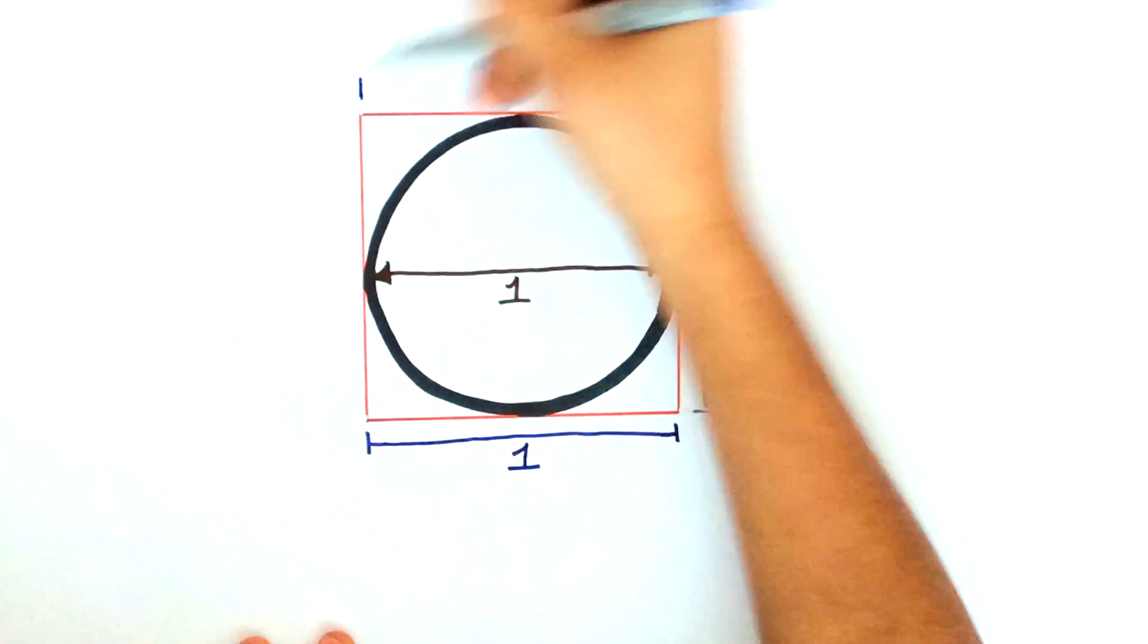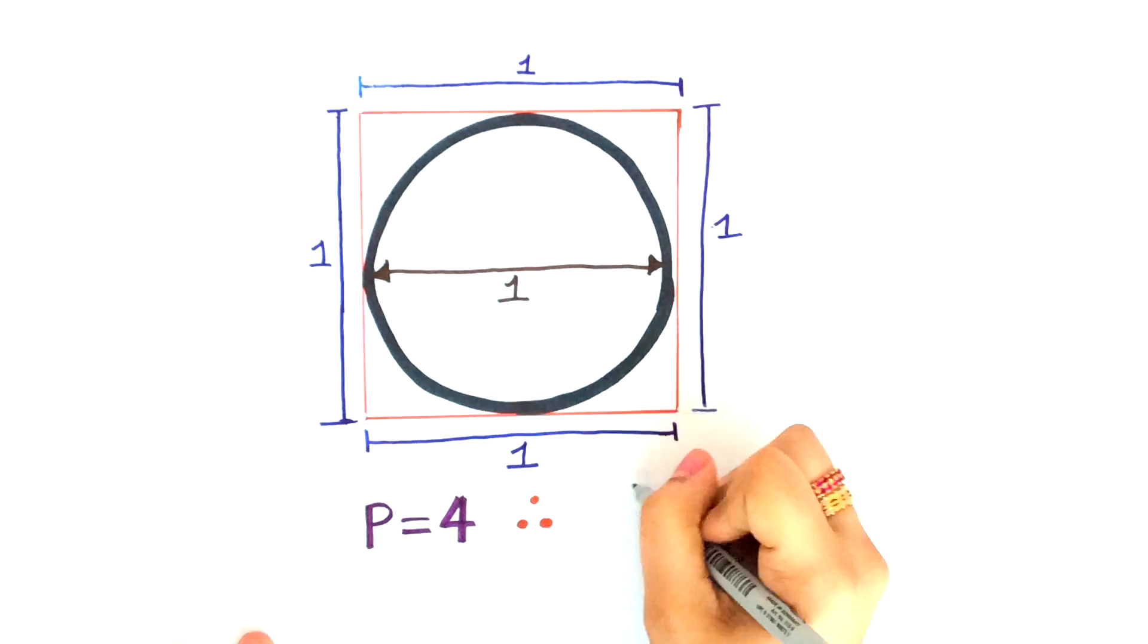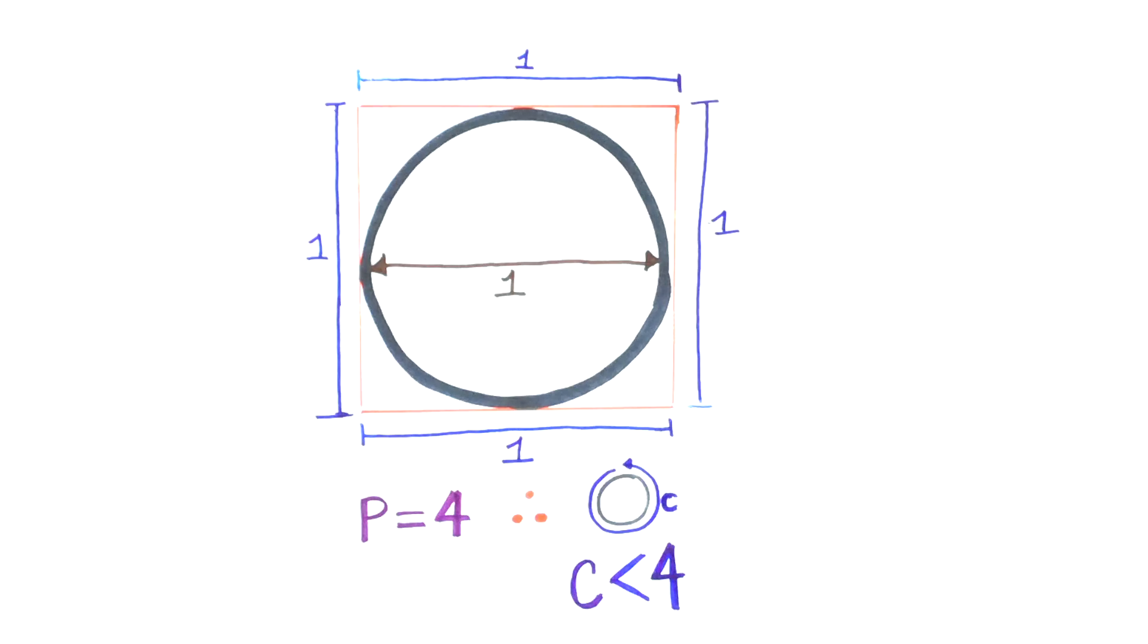Now, draw a square around it. We can clearly see that the circumference of the circle is less than the perimeter of the square, which equals 4.